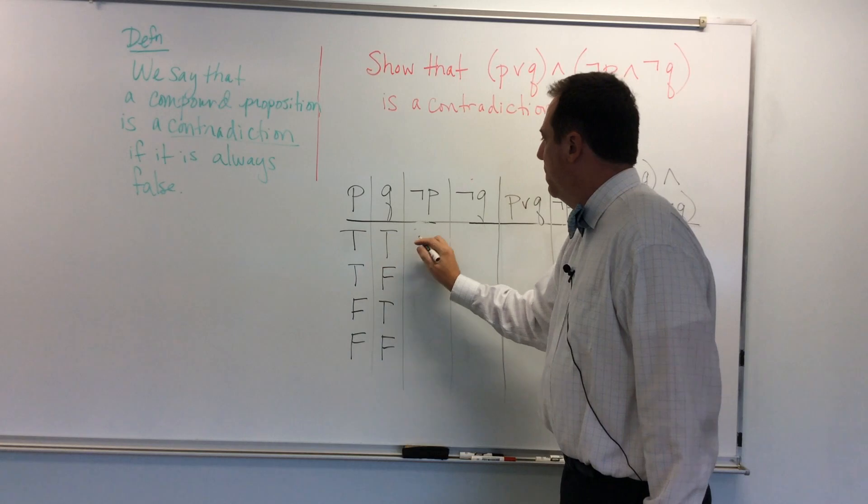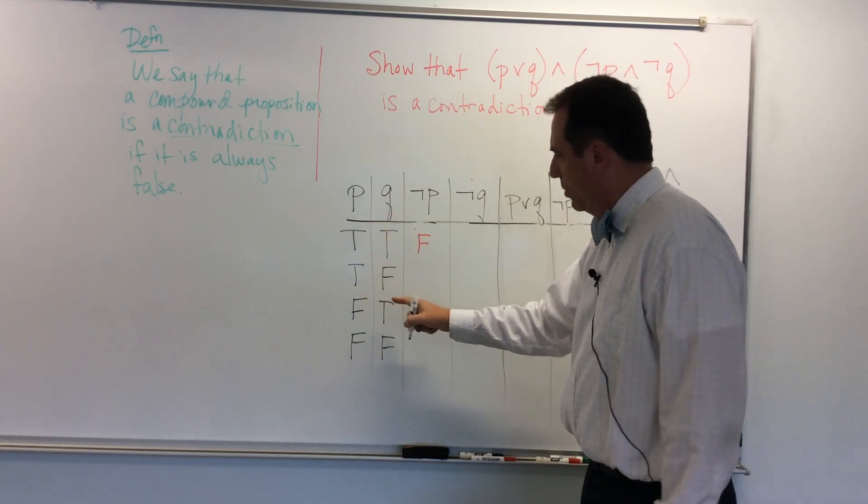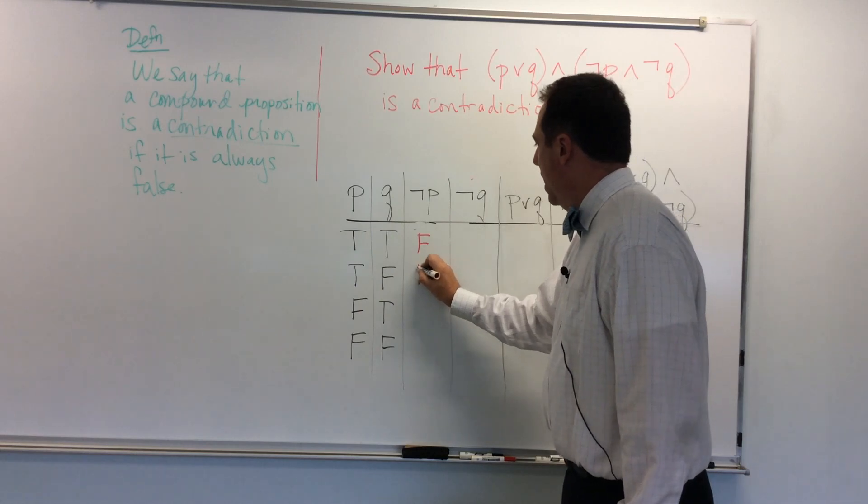So not P, if P is true, is false. Again, I'm just negating the first column here. So we'll do that pretty quickly.